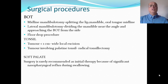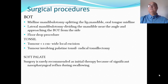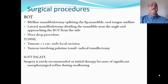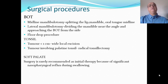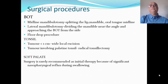Surgical procedures vary by subsite. For the base of the tongue, options include midline mandibulotomy — splitting the lip and mandible in the midline — lateral mandibulotomy from the lateral side, mandibulotomy dividing the mandible near the angle and approaching the base of tongue from the side, and the floor drop procedure. The approach used depends upon the site, size of the tumor, and the patient's general health and expected functional outcome.